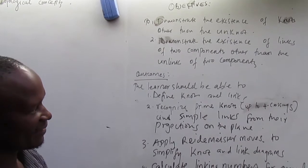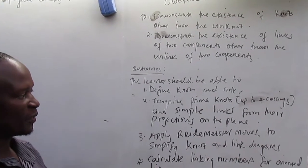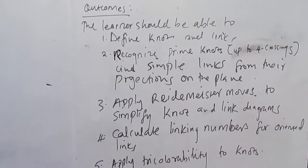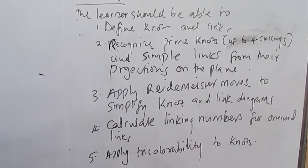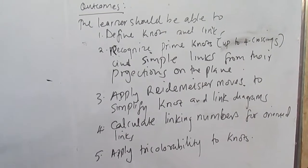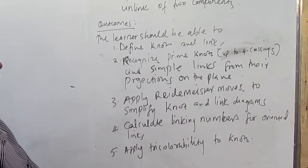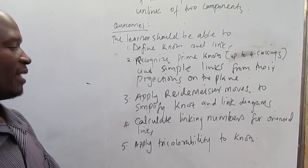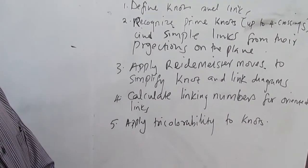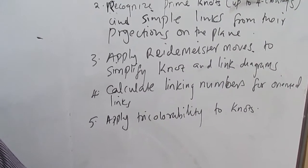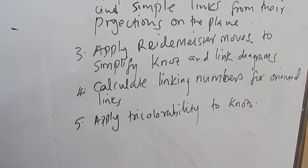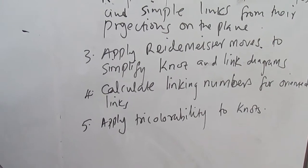By the end of this lecture today you should be able to define knots and links. You should also be able to recognize prime knots up to four crossings, and also simple links from their projections on the plane. You should also be able to apply the Reidemeister moves to simplify knot and link diagrams, calculate linking numbers for oriented links, and apply tricolorability to knots.